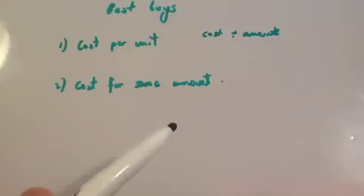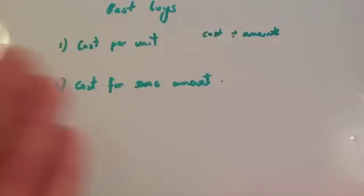The second way is to work out the cost for the same amount. See if there's a way you can buy the same amount using both options and then see which one's the best value for money. Let's look at a couple of examples to see what I mean.